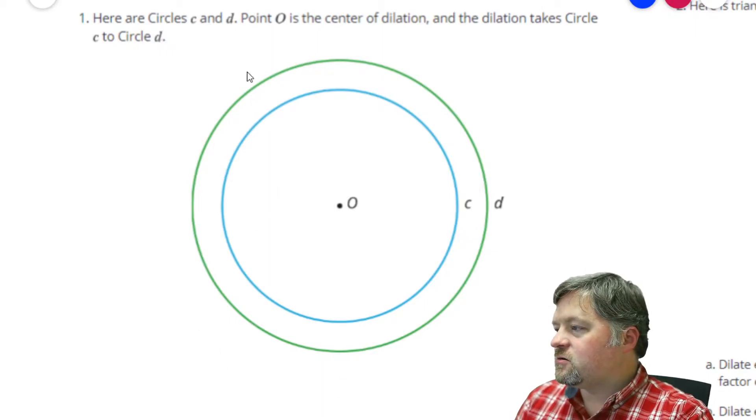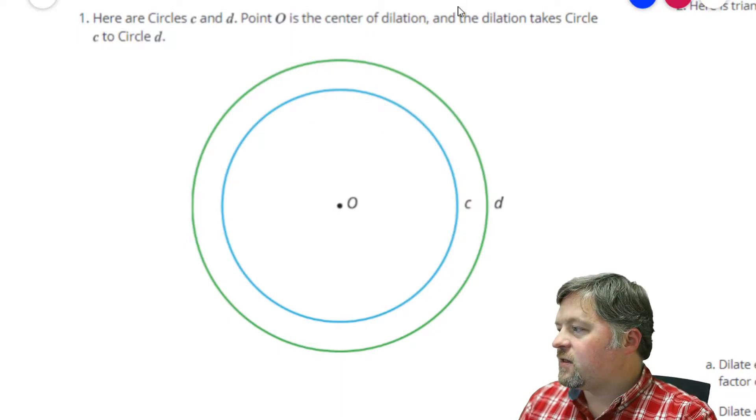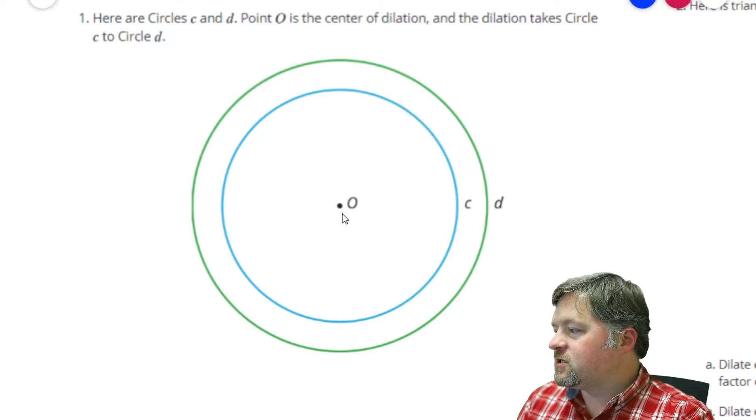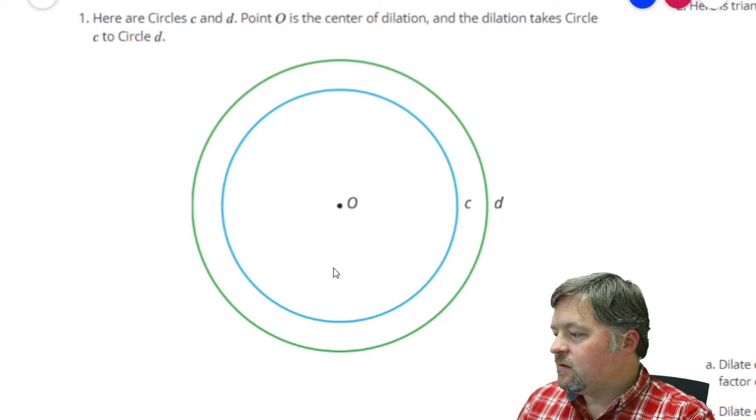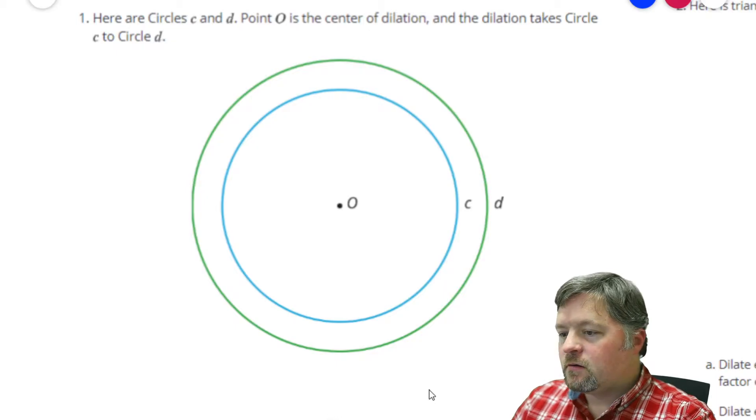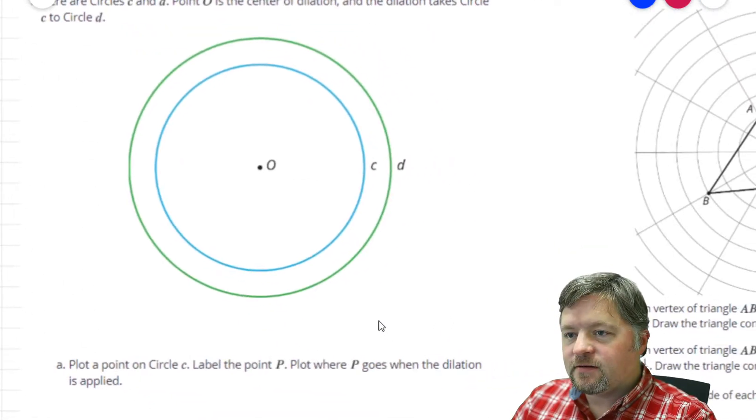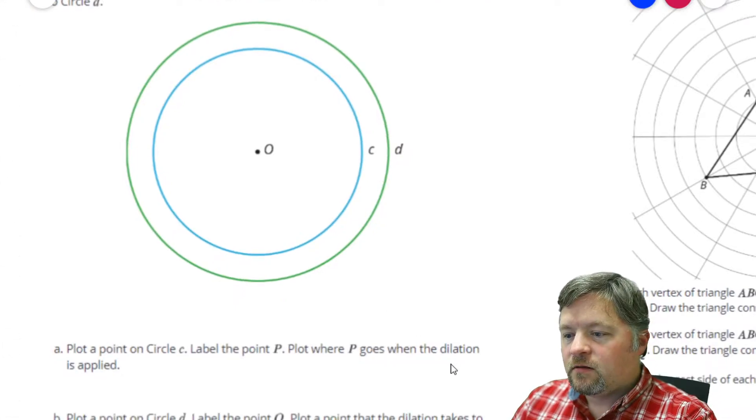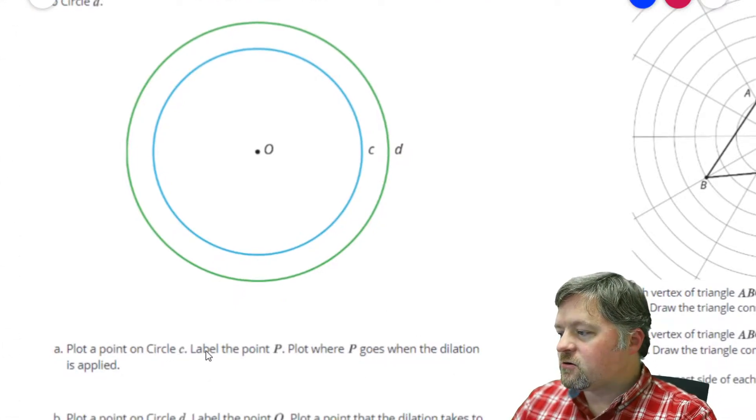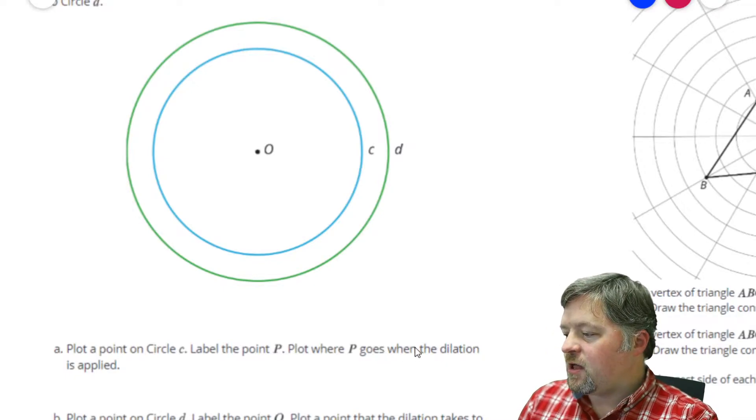Here are circles C and D. Point O is the center of dilation, and the dilation takes circle C to D. Plot a point on circle C, label the point P, plot where P goes when the dilation is applied.